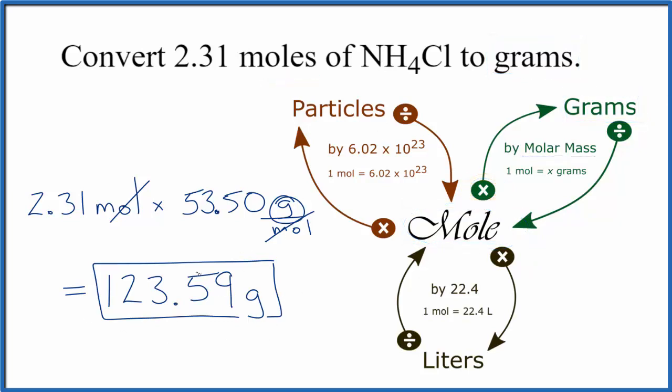If you were given grams initially and you wanted to find the moles of NH4Cl, you take your grams, you divide by the molar mass, and that would give you moles.